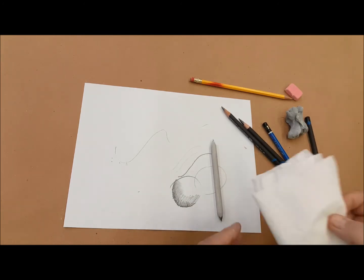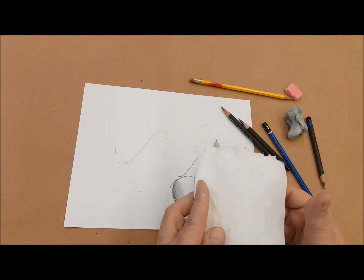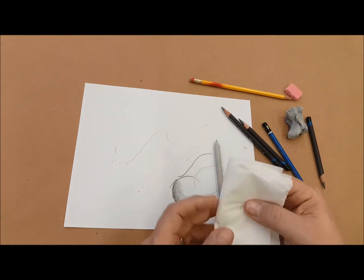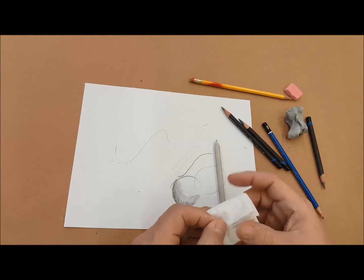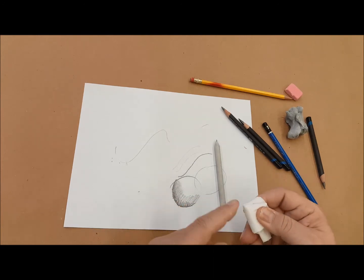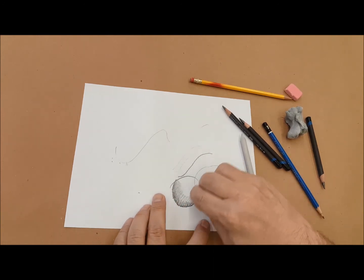Or you can also take a tissue and fold it in half about six times. That's two, three, four, five, six times. Then you use the corner, and that can also be used to blend and shade.